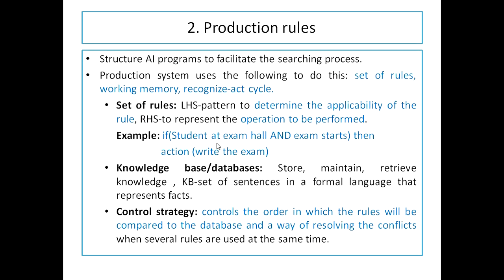Next, let us discuss production rules-based representation in detail. This is one of the widely used representations in AI-based problem solving. It gives a way of structuring programs to improve the search process. It has three important parts: a set of rules and working memory, and a recognize-act cycle. Each rule consists of an antecedent part and a consequent. The antecedent determines the conditions or facts to consider; the consequent shows the operations to perform. For example, if 'student is at exam hall' and 'exam is to start', then the action is 'student will start writing the exam'.